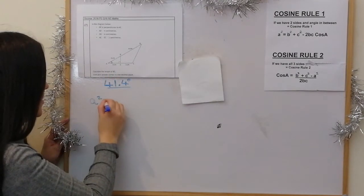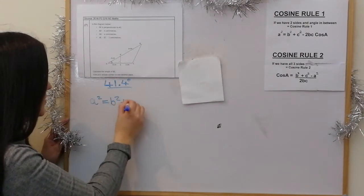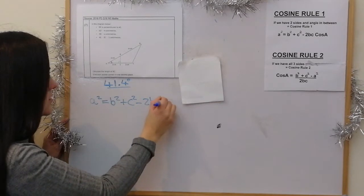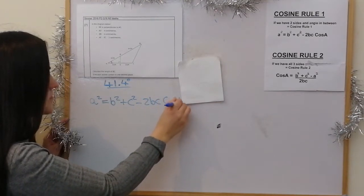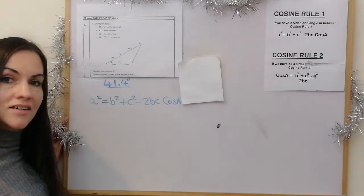So a squared equals b squared plus c squared, take away 2bc cos a. So a squared is this side.